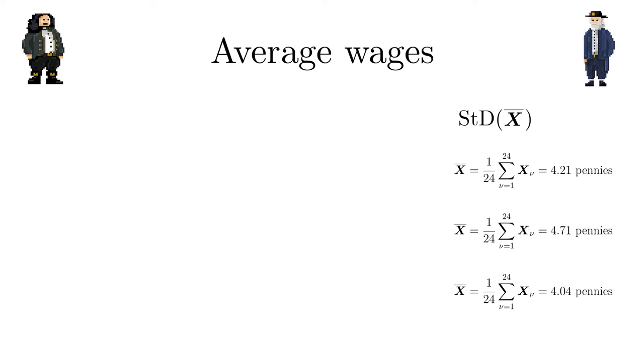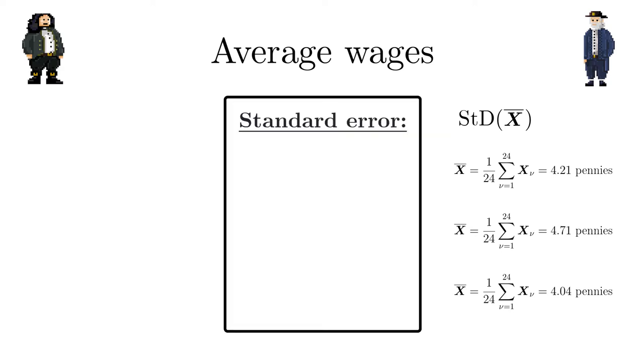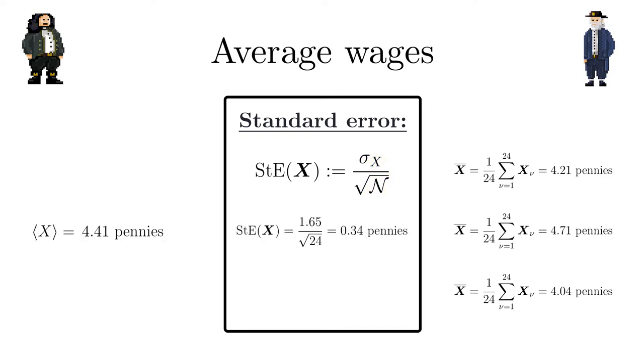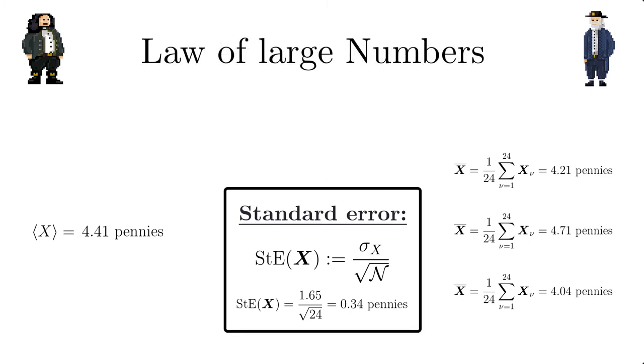It is quantified by the standard deviation of the sample mean which is also called standard error. If the underlying probability distribution has a finite variance then the standard error of a sample of size n is given by the intrinsic standard deviation divided by the square root of the sample size n. This brings us to the second part of the law of large numbers which according to the standard error states that with increasing sample size n the sample mean approaches the intrinsic mean like 1 over square root n.